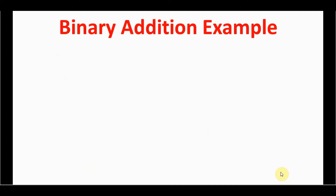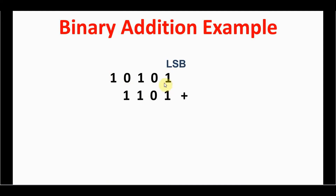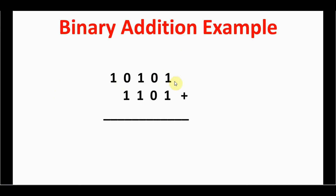Now let's see how to add two binary numbers. The first number has five digits and the second number has four digits. For any binary number you should know the MSB (most significant bit) and LSB (least significant bit). The rightmost digit is the LSB and the leftmost is the MSB.